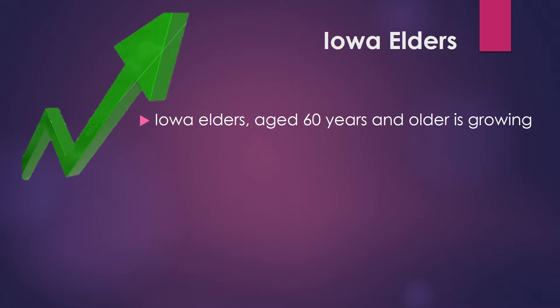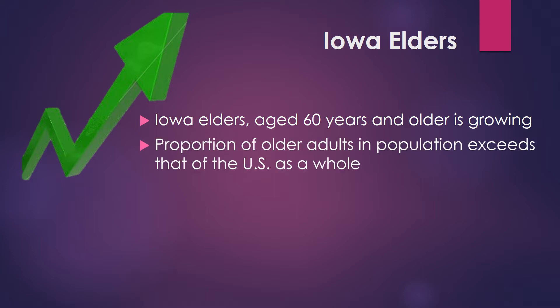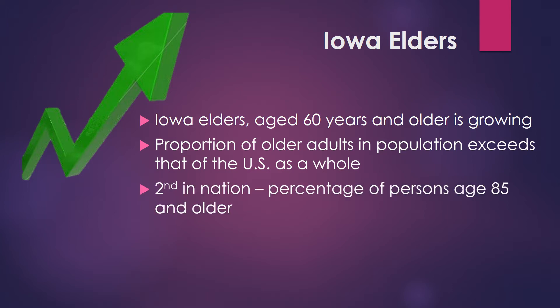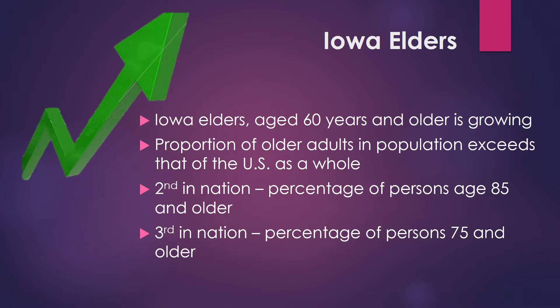Iowa has an increasing proportion of people who are aged 60 years and older. The group aged 80 years and older is increasing more rapidly than any other age group. Iowa's proportion of older adults in the population exceeds that of the United States as a whole. In fact, Iowa ranks second in the nation with persons aged 85 and older, third in the nation with persons 75 and older, and fourth in the nation with persons 60 and older.